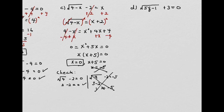For part d, isolate the square root by subtracting 3, giving square root of 5q minus 1 equals negative 3. Even before squaring both sides, we can recognize this has no solution because a square root cannot equal a negative number. So we can immediately say there are no solutions.